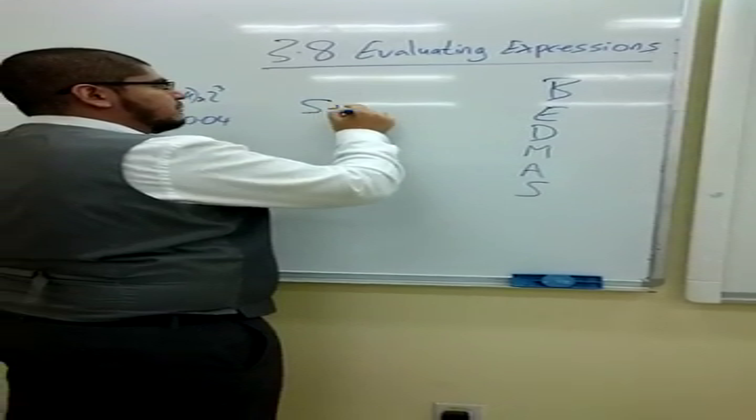Even as simple as 5 plus 3 times 2, the multiplication comes before the addition. Therefore, we must do this bit first. Otherwise, you get two different answers. Doing it like this, we get 6 plus 5, which is 11.